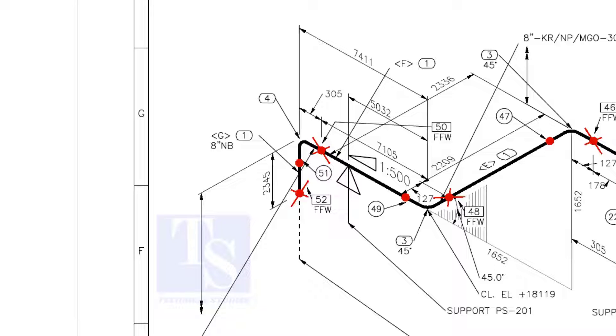As per the drawing, the length of this pipe is 7105 mm. But we will fabricate a minimum length of a 7205 mm pipe.